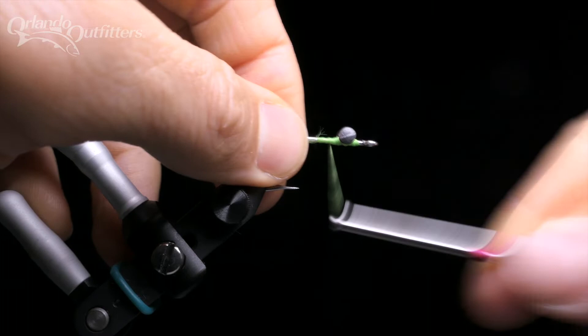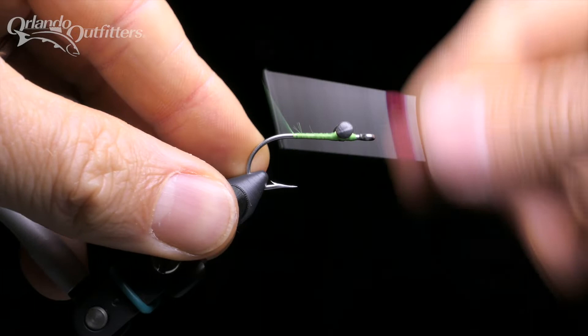Tight wraps make durable flies. Sure, there are times when you need to make loose wraps, but in general, the tighter your wraps are, the more durable your flies will be.